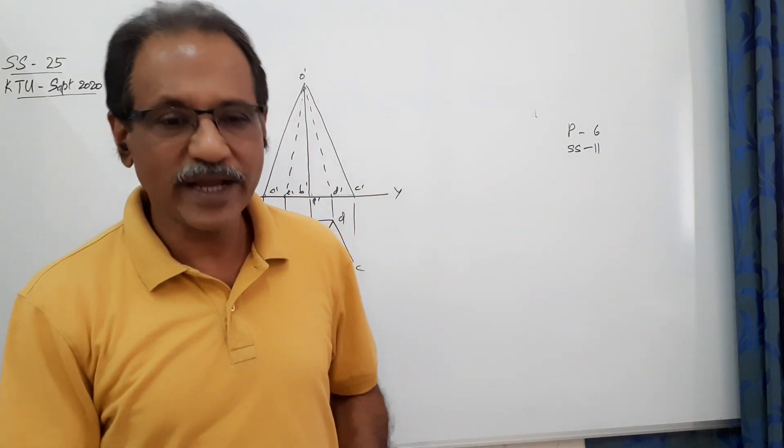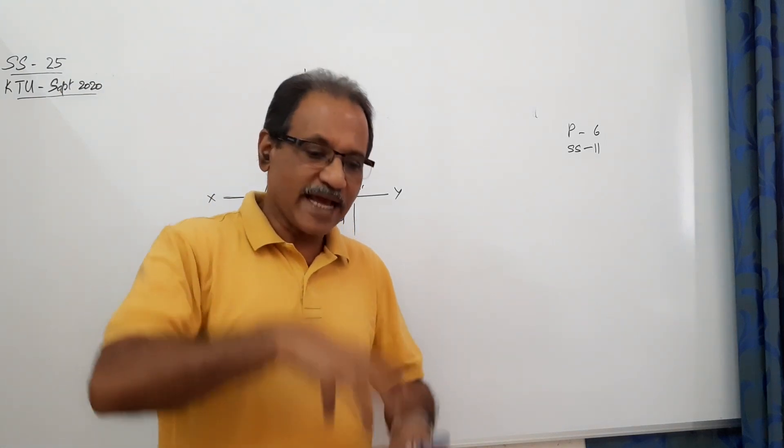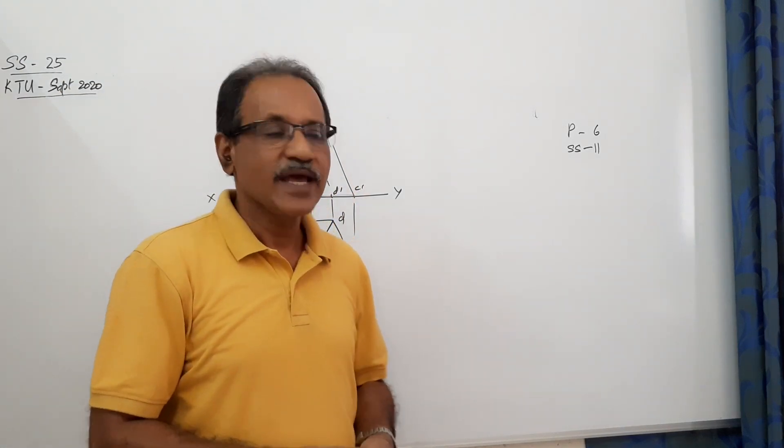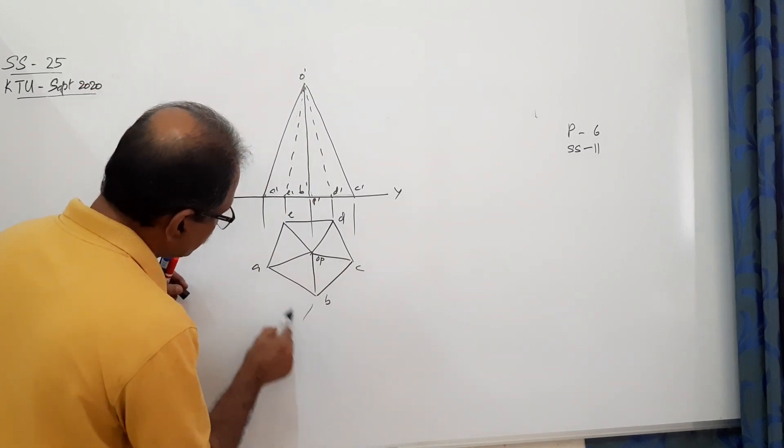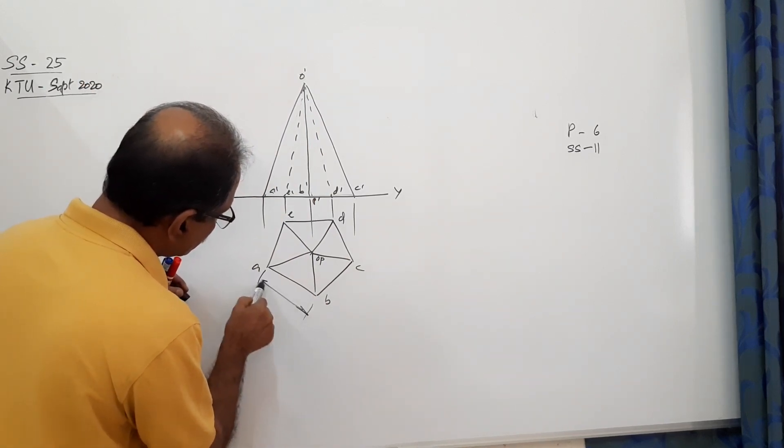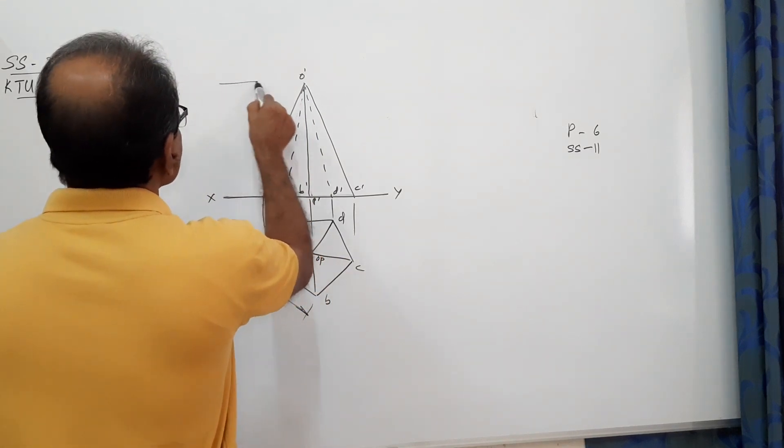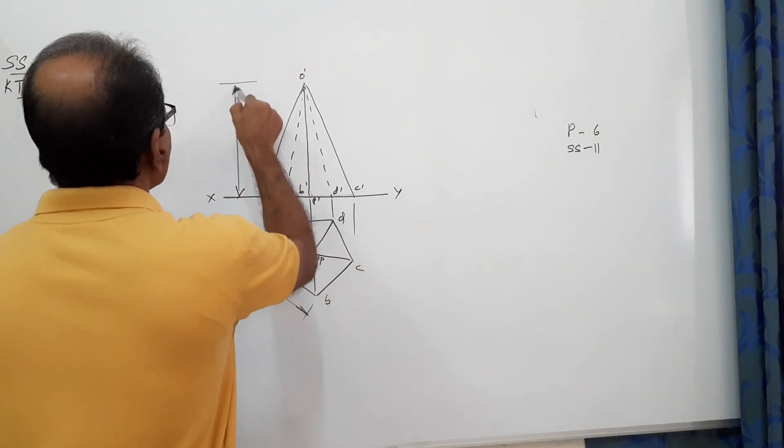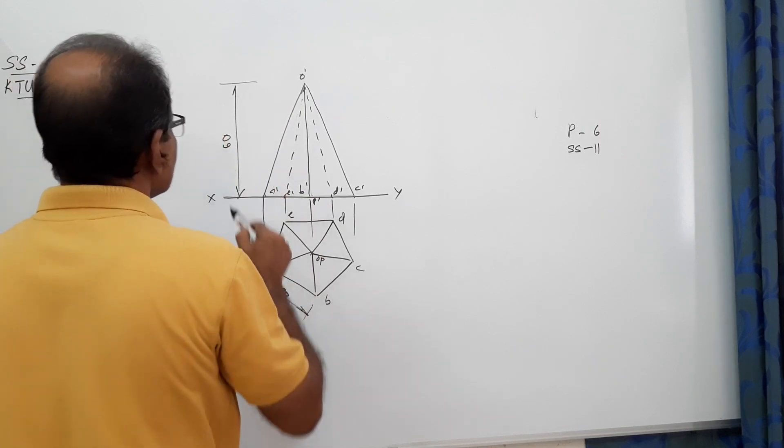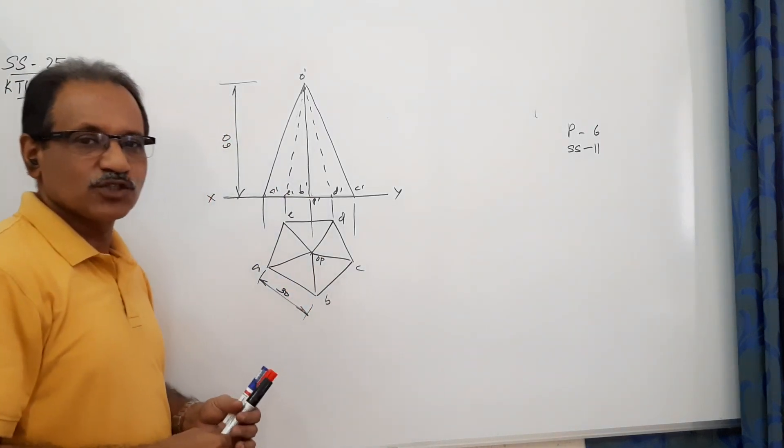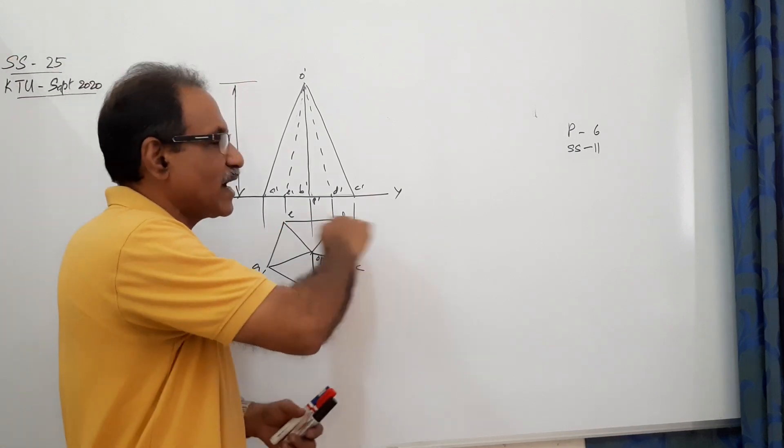The question says about a pentagonal pyramid standing on its base on HP. A pentagonal pyramid 30mm side, 60mm axis, standing on its base on HP with a side of base parallel to VP.